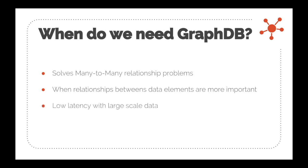The third reason is low latency with large-scale data. When you have lots of relationships in a relational database, the data sets become huge and query complexity increases — relational joins take more time than usual. However, a graph database is specifically designed for this purpose, and you can query relationships with ease.